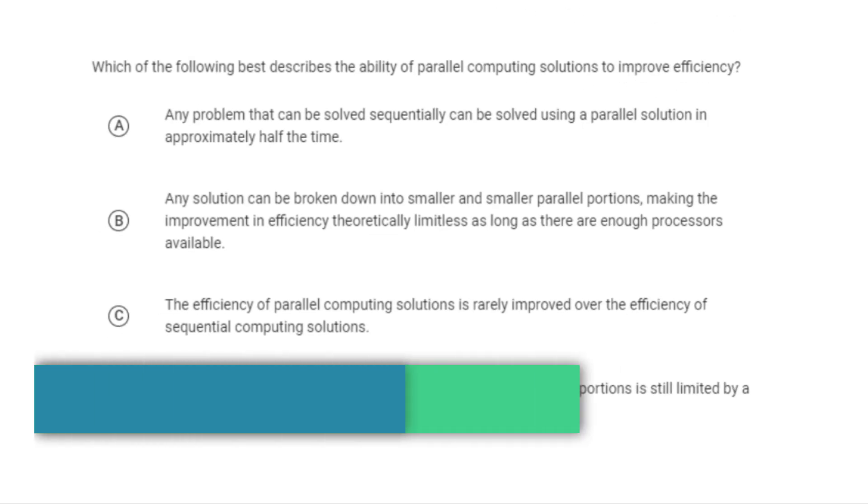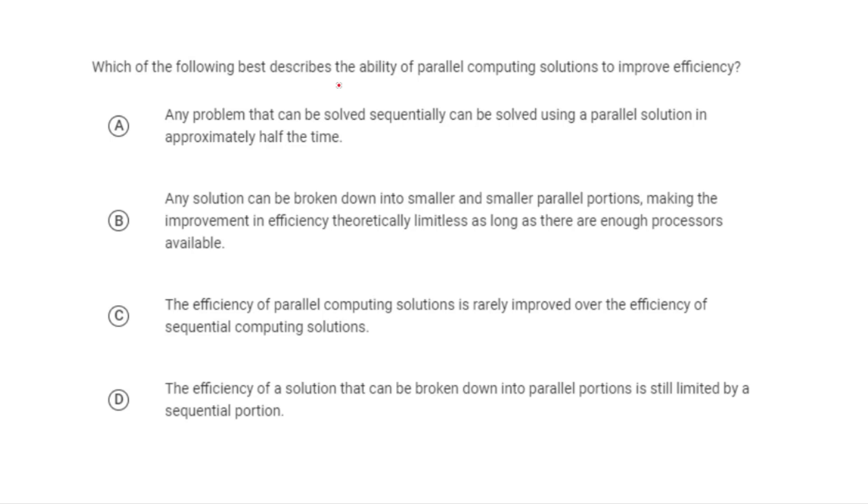Let's look at some more stuff about parallel algorithms. The question is asking, which of the following best describes the ability for parallel computing solutions to improve efficiency? The first one says, any problem that can be solved sequentially can be solved using a parallel solution in approximately half the time. So there's a couple of things wrong with this one. The most important thing is that first part right here, which is any problem that can be solved sequentially can be solved using a parallel solution. We actually just showed an example that disproves that in the last one.